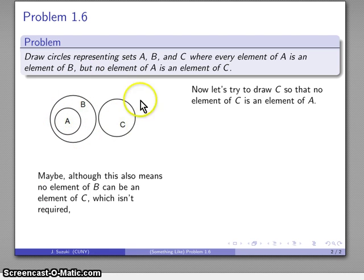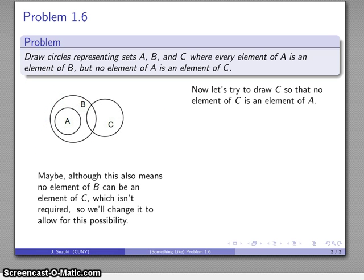Because it's not required, this picture is not a sufficiently generic picture. We're going to slide C over here. Now we still have no element of A can possibly be an element of C, but we're allowing for the possibility that B and C might have some elements in common. There's our picture.